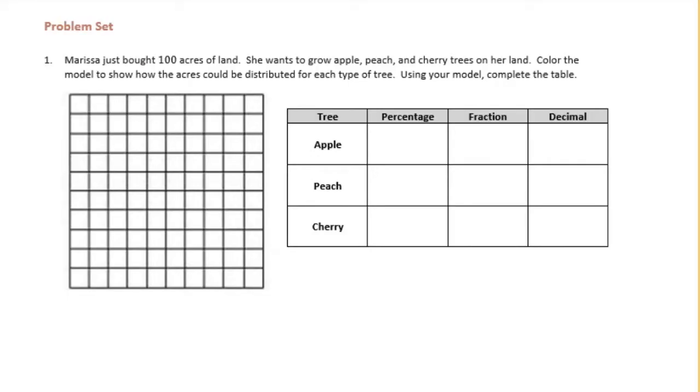So this is a 10 by 10 grid, meaning that there are 100 little blocks here, which represent, each one represents one acre out of the 100 that she bought. So she wants to grow apple, peaches, and cherry trees. Now there's many different ways that you can divide this up. It just needs, at the end of the day, it needs to add up to 100%. So I'm going to start out with apple.